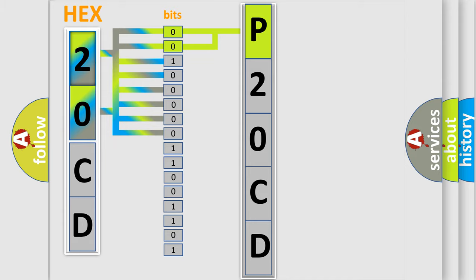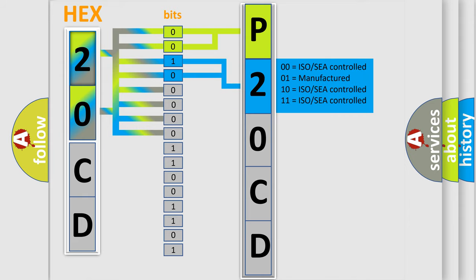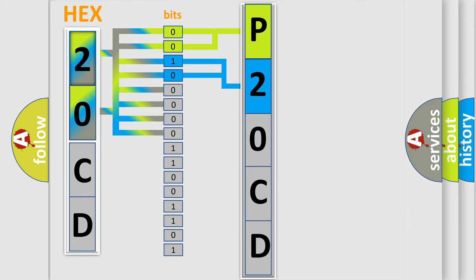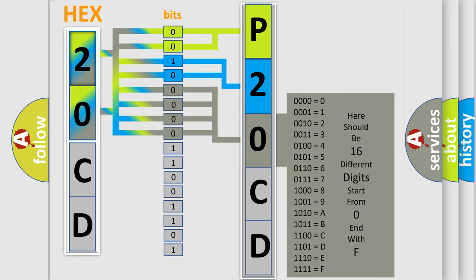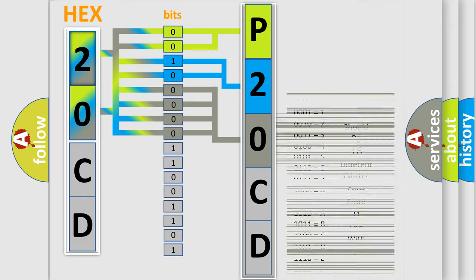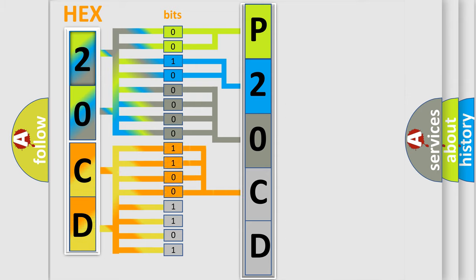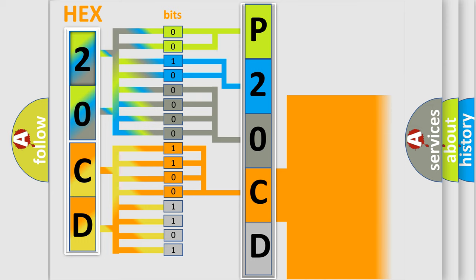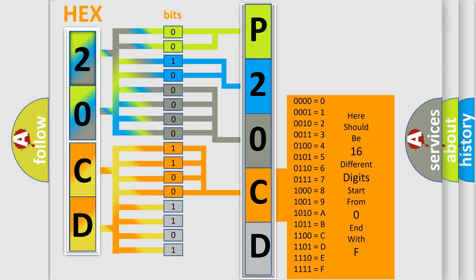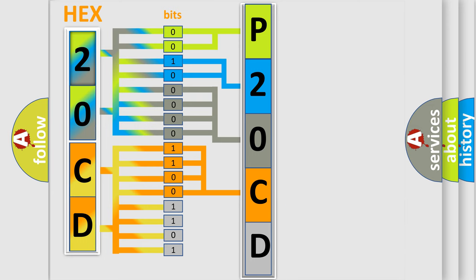The next two bits determine the second character. The last four bits of the first byte define the third character of the code. The second byte is composed of a combination of eight bits. The first four bits determine the fourth character of the code, and the combination of the last four bits defines the fifth character. A single byte conceals 256 possible combinations.